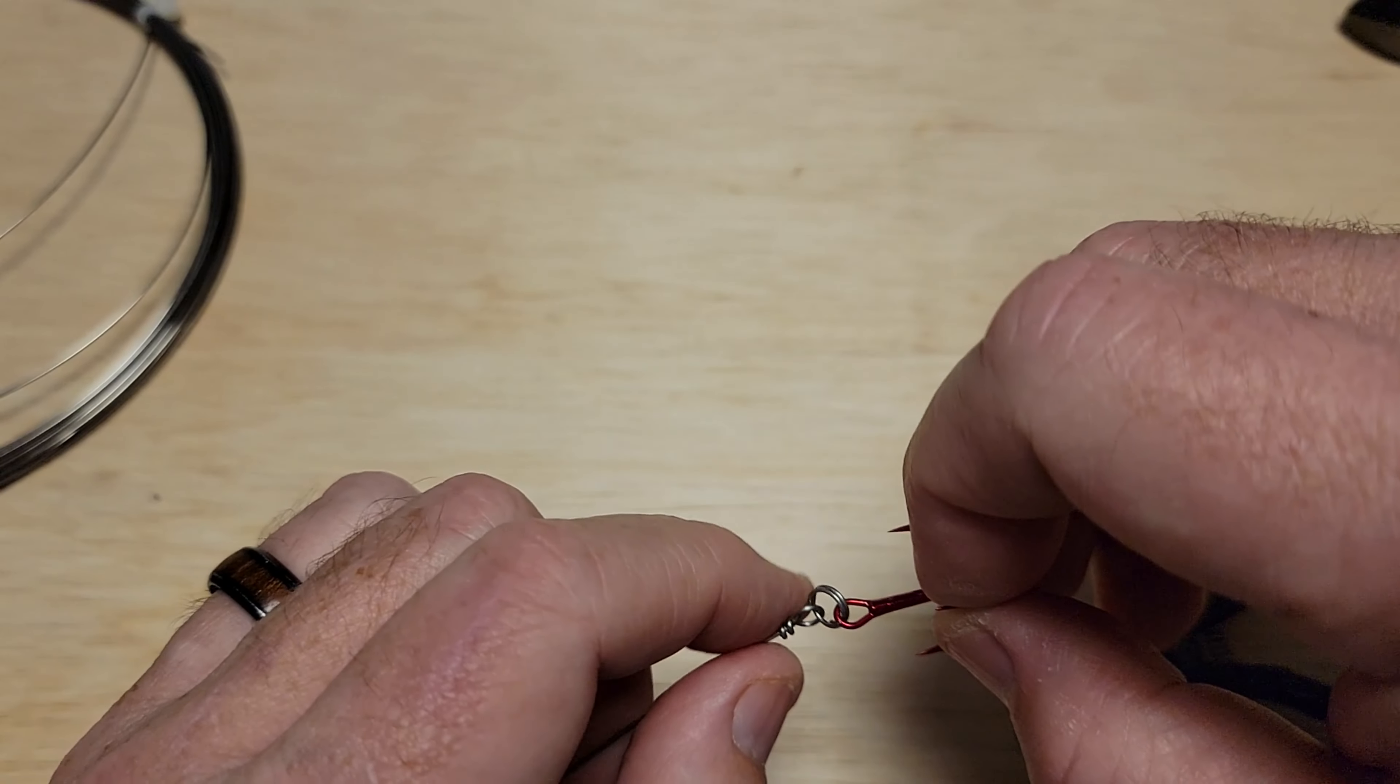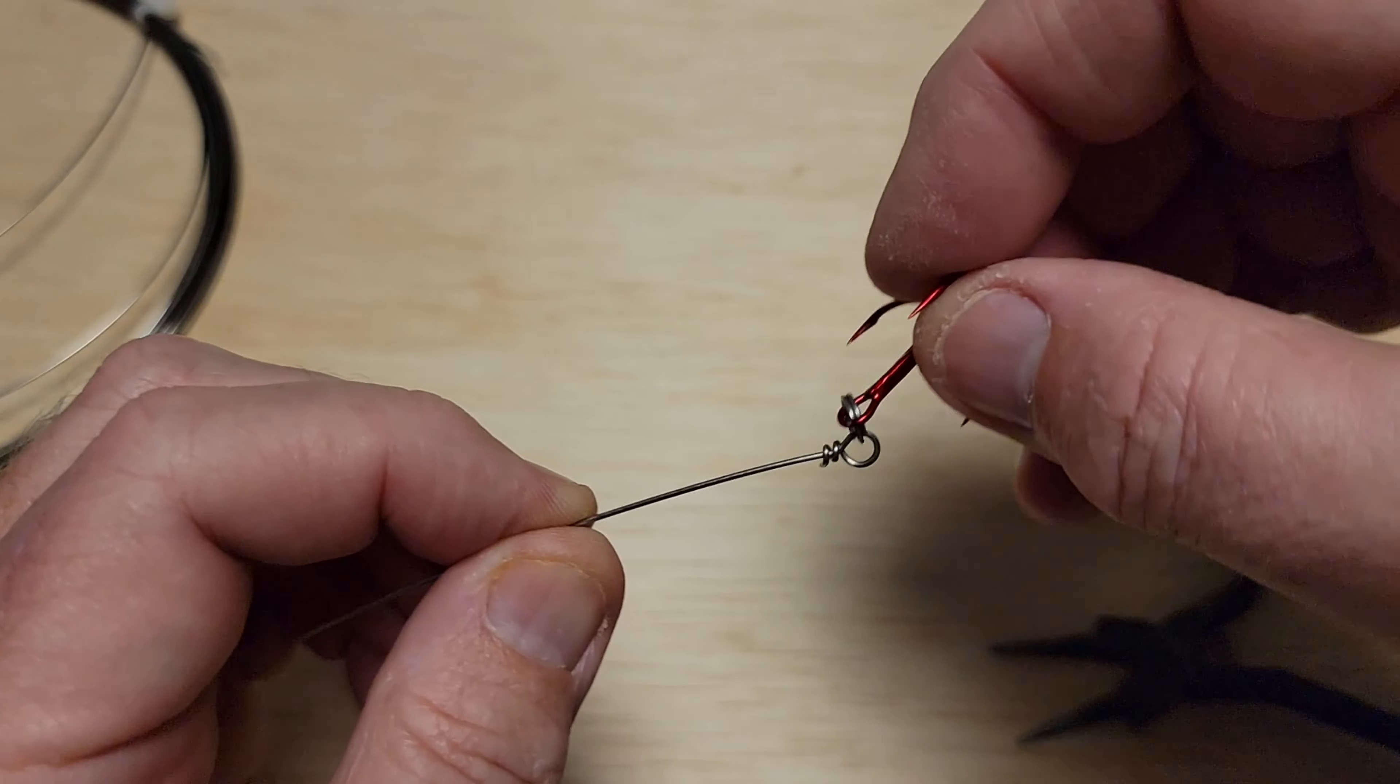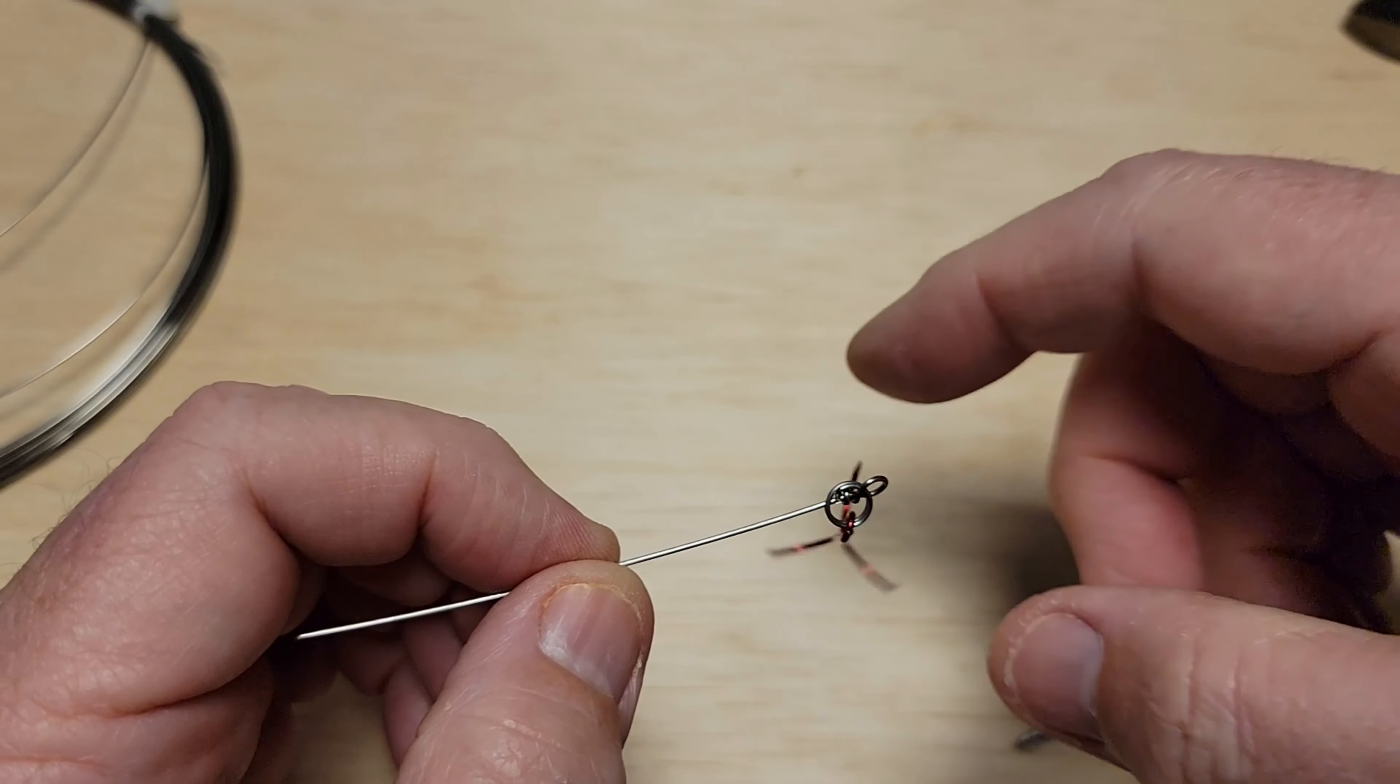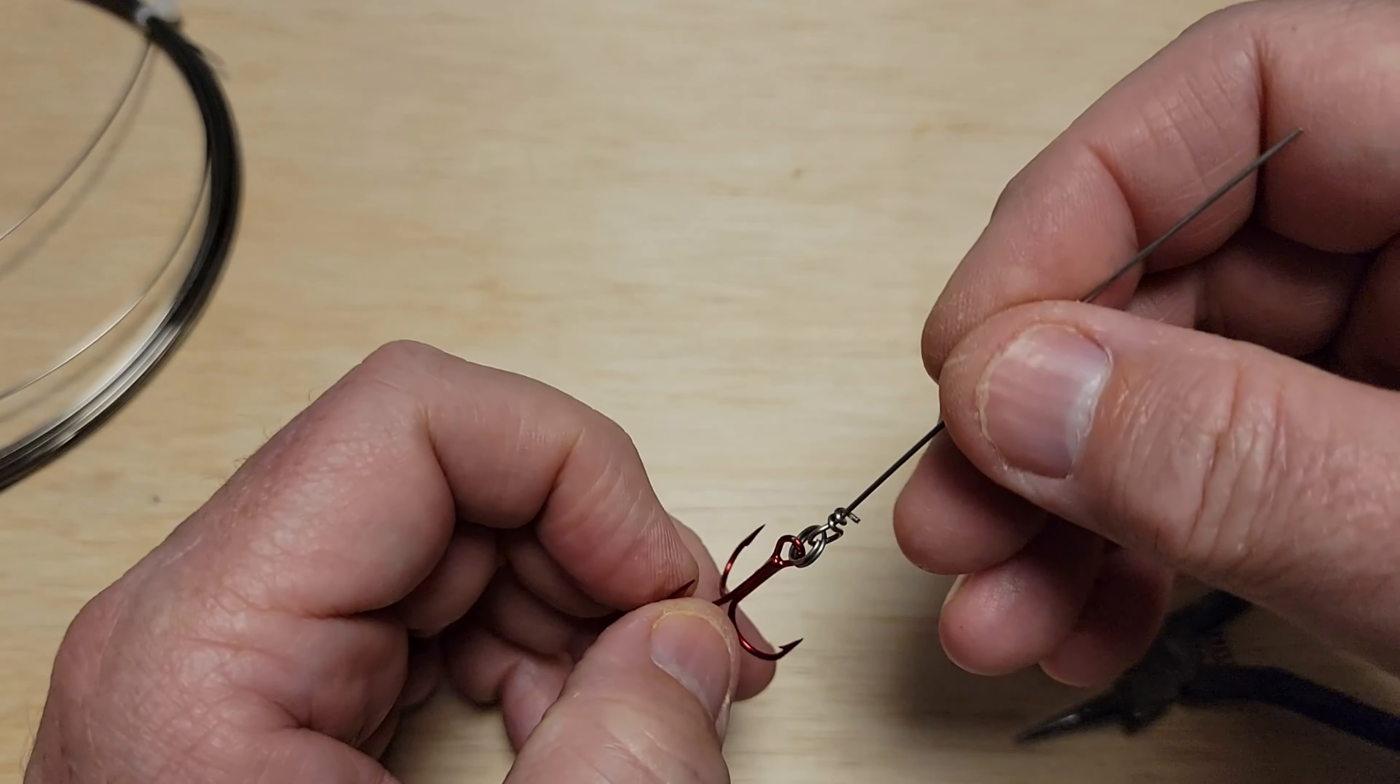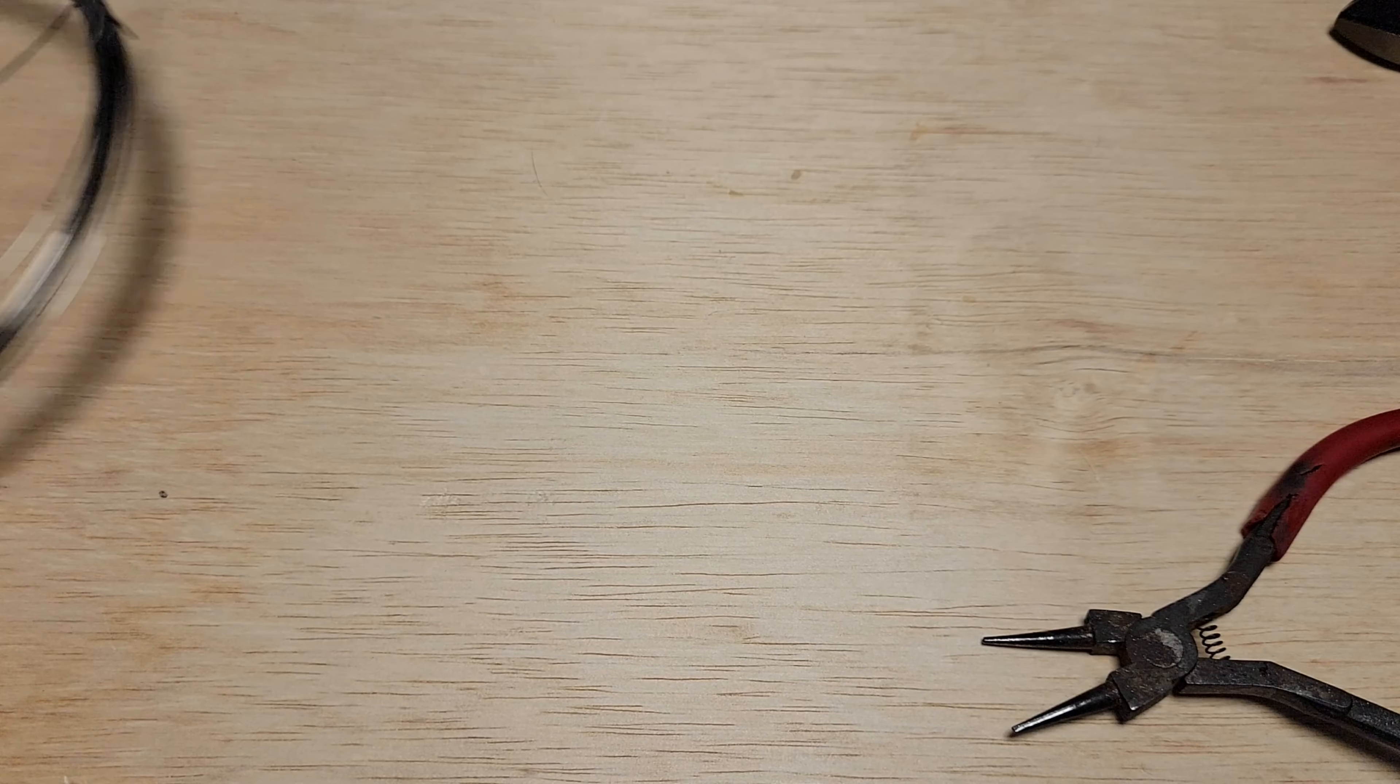With treble hooks, with the split ring or attached directly to the loop on inline spinners, they tend to rotate a little bit. What happens is this back hook kind of rotates with it. It gives it a little more action and looks like the tail of the fish or whatever is swimming that the inline spinner is supposed to represent. I do like using treble hooks on inline spinners for that reason.